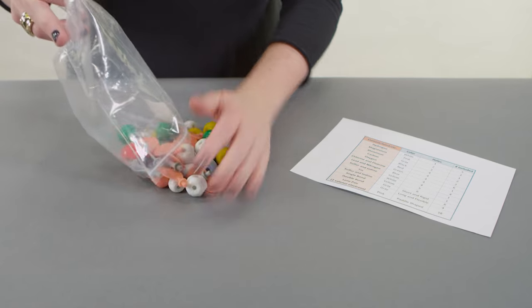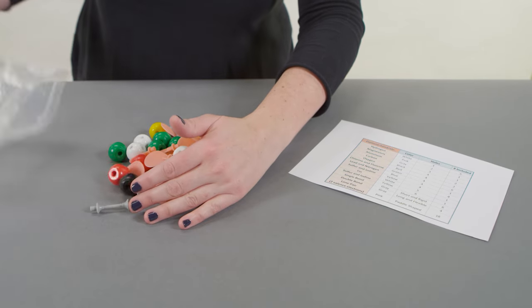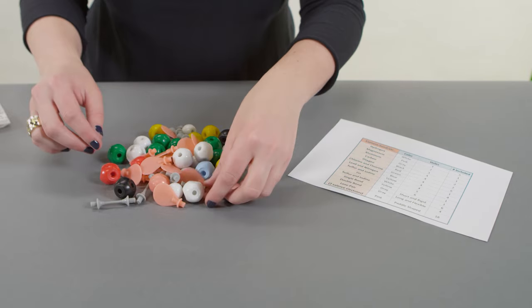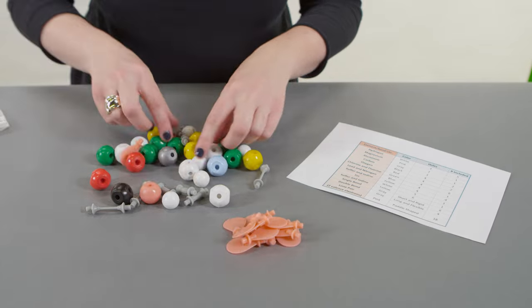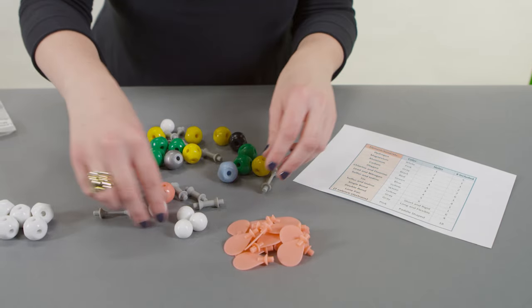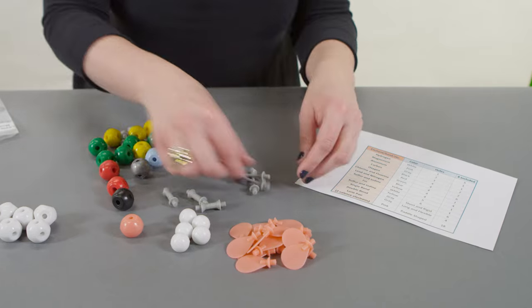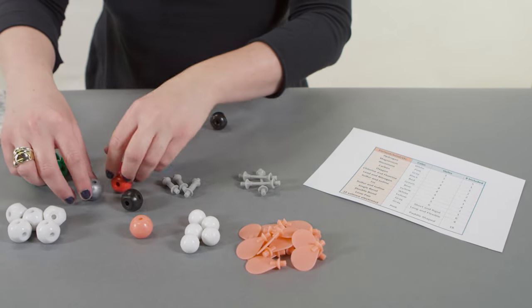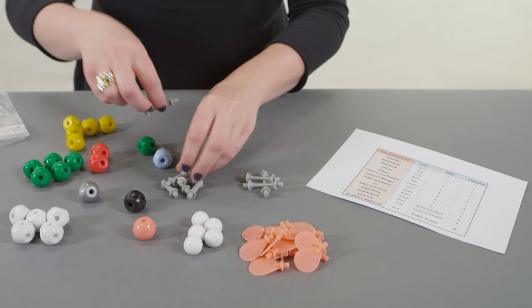Remove your modeling kit from the box and separate the pieces by color and number of holes. For example, place all of the white pieces with one hole together and all of the black pieces with four holes together. Organizing your modeling kit will help prepare you to build molecules.